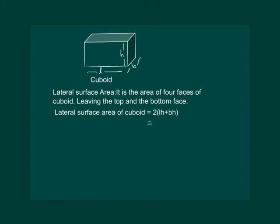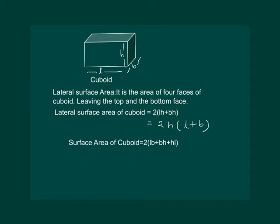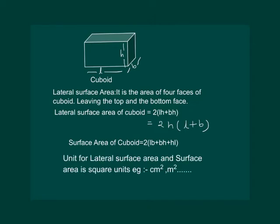This is also equal to 2 times height × (length + breadth). We must remember the formulas for surface area and lateral surface area of the cuboid to solve the problems in the chapter. The unit for area is centimeter square, meter square, or kilometer square, depending on the unit in which the dimensions are given. Similarly, the unit for lateral surface area and surface area is a square unit — either centimeter square, meter square, and so on.